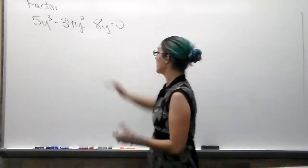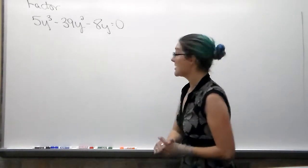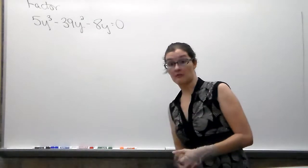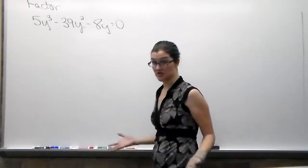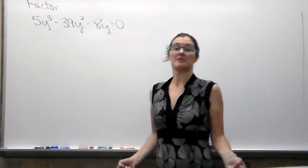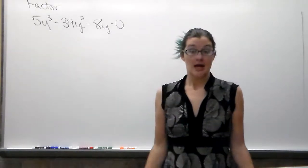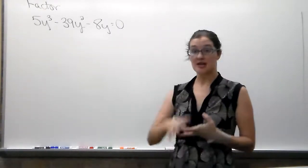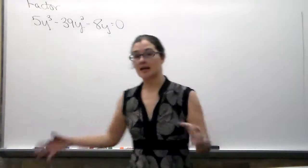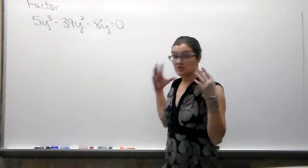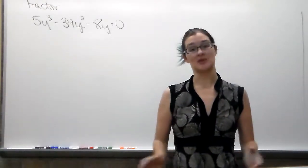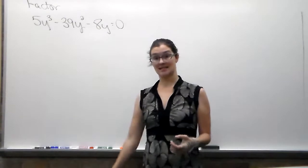And so what we have here is 5y³ - 39y² - 8y = 0. And we're told to solve. And we're going to solve by factoring because it's so important for everyone to know how to factor. If you're going through intermediate algebra, college algebra, pre-cal, trig, any of your math classes that lead through the STEM path, you have to know how to factor in order to be successful in both your class and the next class.